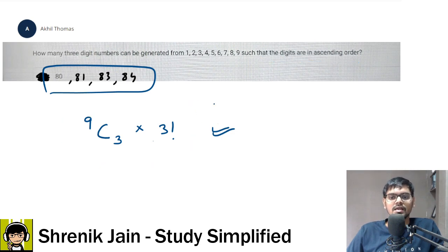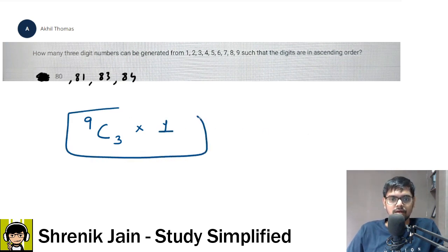Now, this is not what your ascending order looks like. So what is the right answer? The right answer is you have to multiply into one. That is the right answer. Now your doubt is why this one? Why not three factorial? Let me explain.